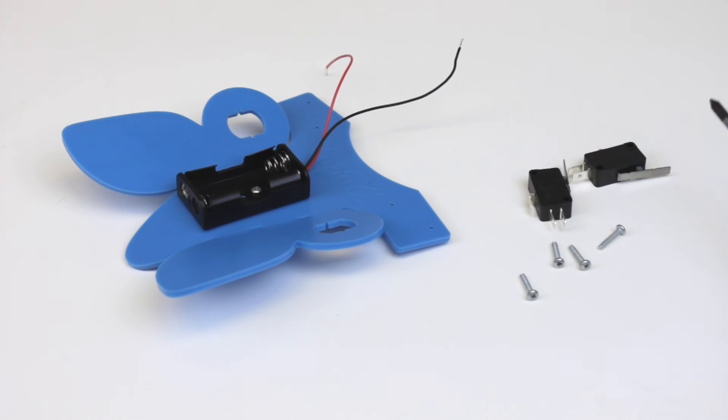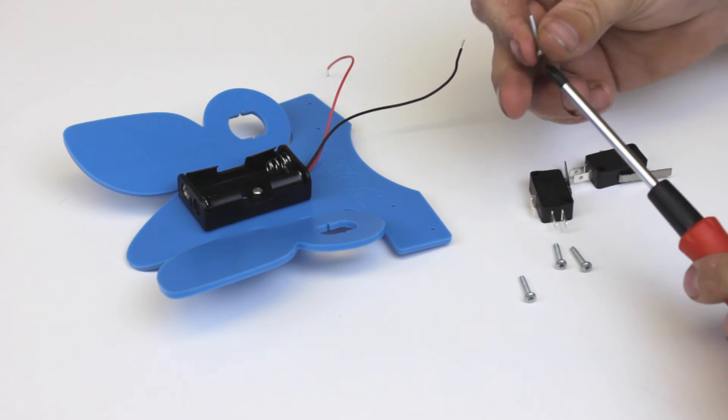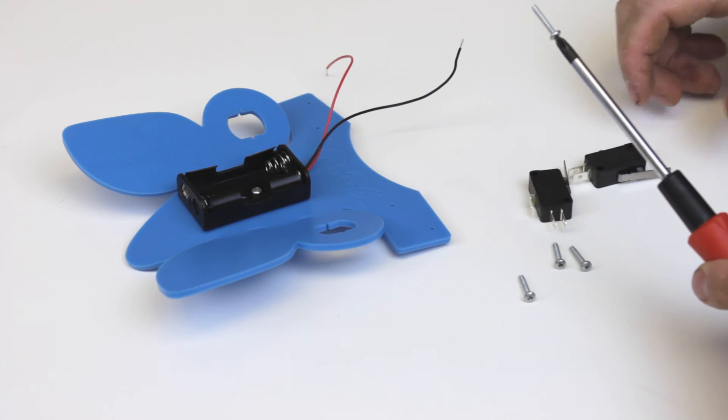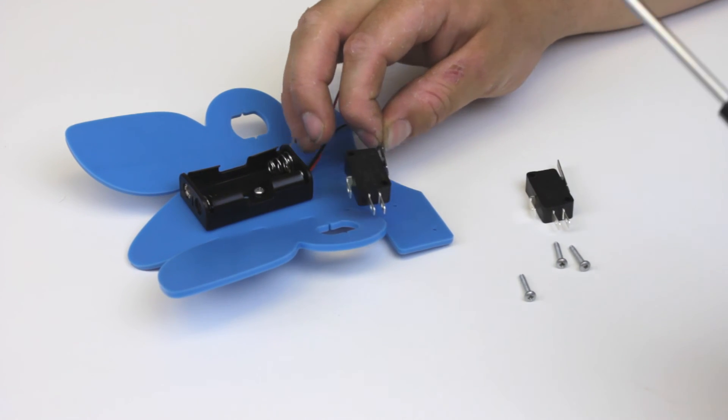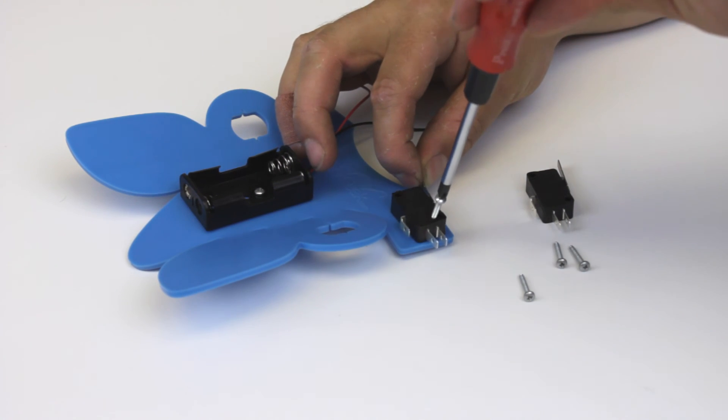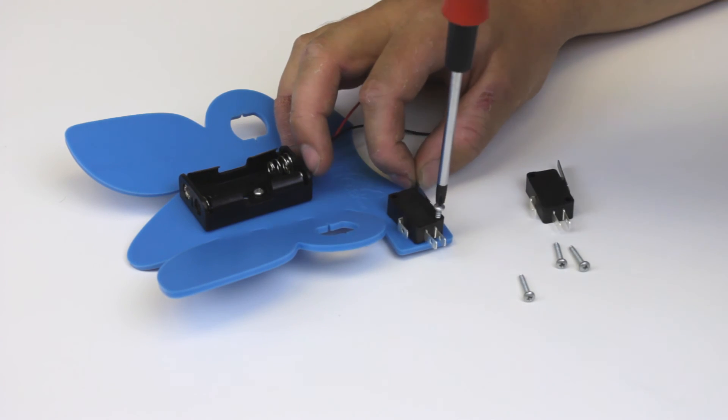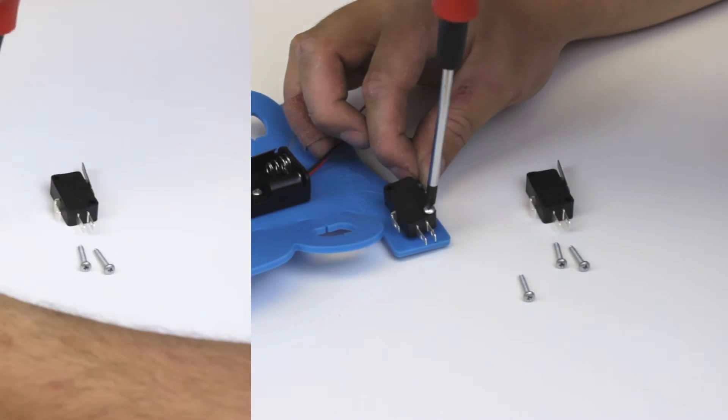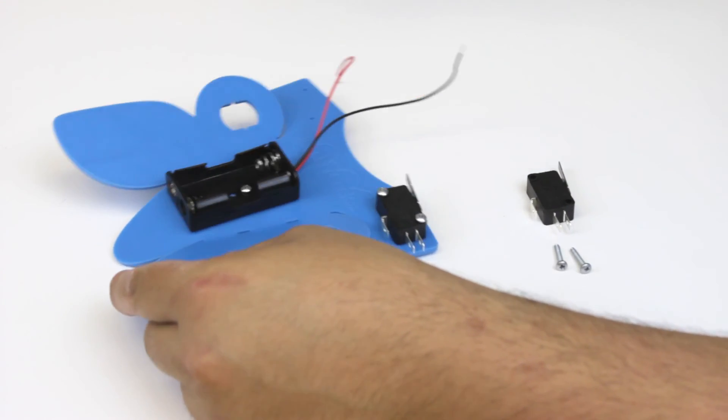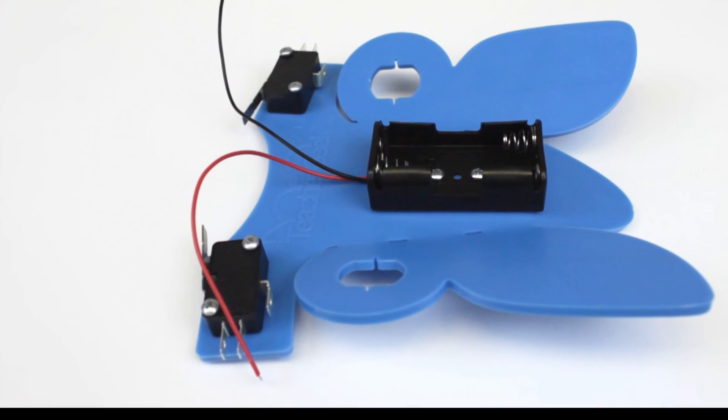For attaching the switch you will use the longer screws. Grab your switch and then set it on the bug. Take your screw and screw down the switch. Now don't screw it in all the way until you get the other screw started and then you can go ahead and tighten them down. Once you've installed one switch go ahead and do the other side.